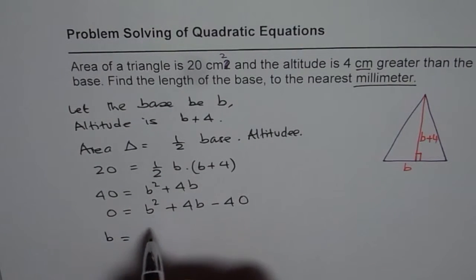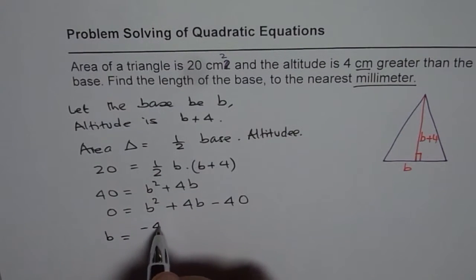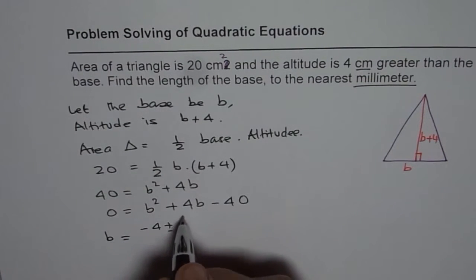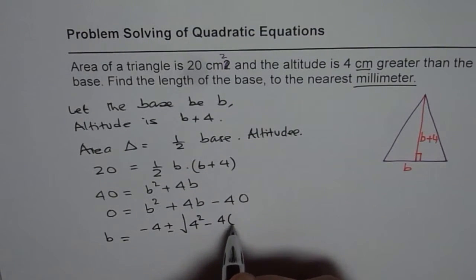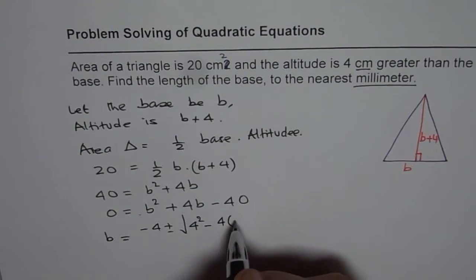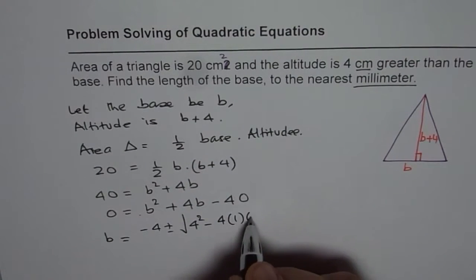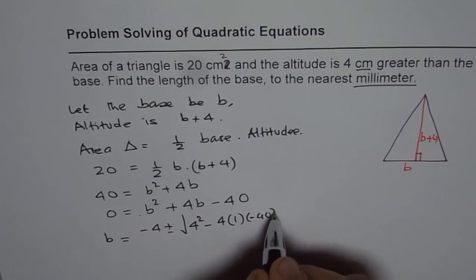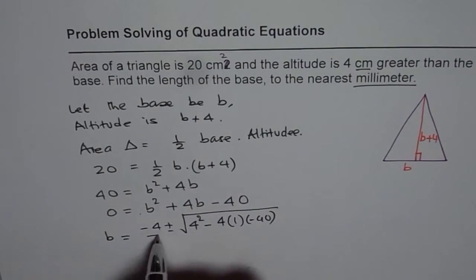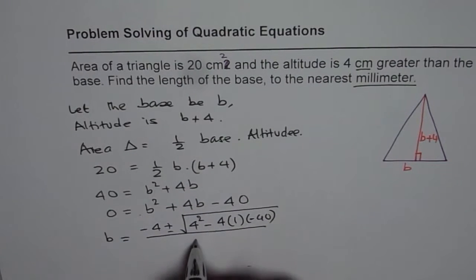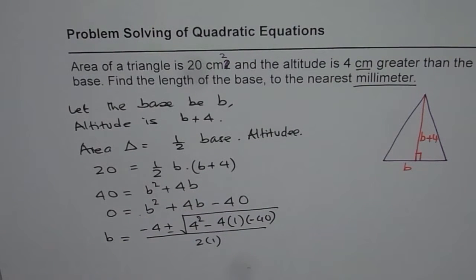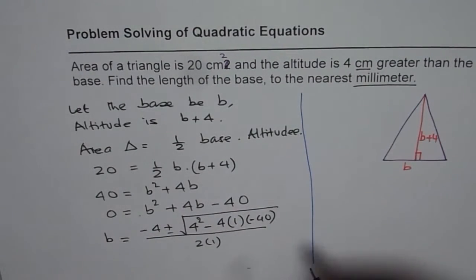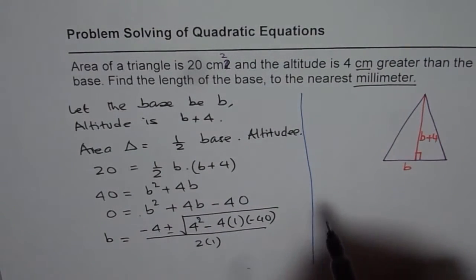B equals negative 4 plus or minus the square root of 4 squared minus 4 times a, which is 1, times negative 40, all divided by 2 times a, which is 1. Apply the quadratic formula, use the calculator, and find the answer.